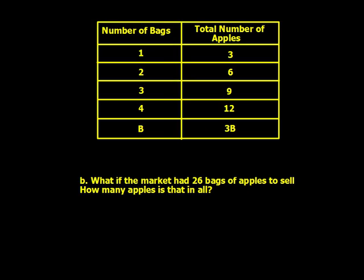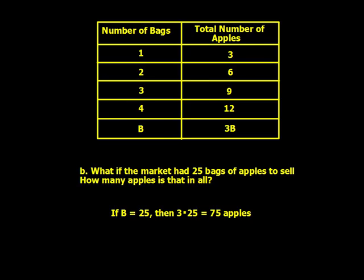Letter B: what if the market had 26 bags of apples to sell? How many apples is that in all? Pause the video and come back when you're ready. Here's our answer: if B is 25, then 3 times 25 equals 75 apples.